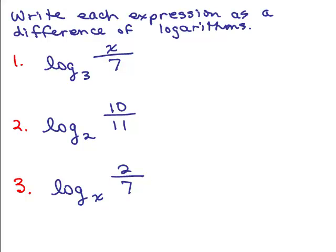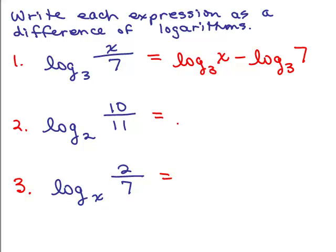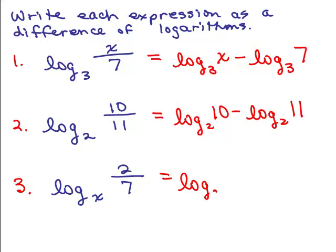Here are three problems for you to do using the quotient rule. Put the video on pause and try these. Taking the log base 3 of x over 7: that's just log base 3 of the numerator minus log base 3 of the denominator. Second: log base 2 of 10 minus log base 2 of 11. And the last one: log base x of 2 minus log base x of 7.